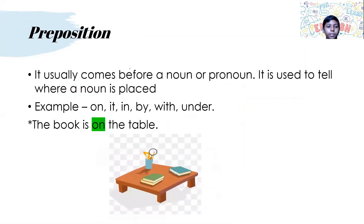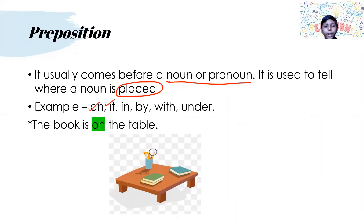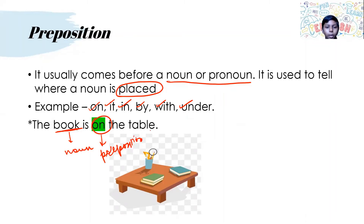Preposition. It usually comes before a noun or pronoun and tells you where a noun is placed. Examples: on, in, by, with, under. Example: 'The book is on the table.' It tells you where the book, which is the noun, is — it is on the table. Here on is the preposition and table is the object, another noun.